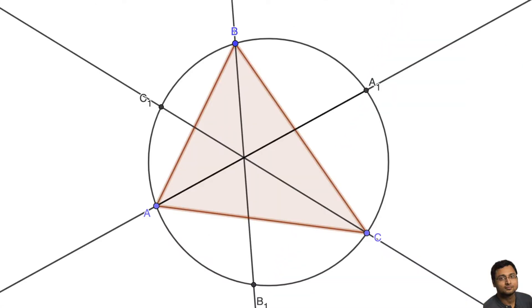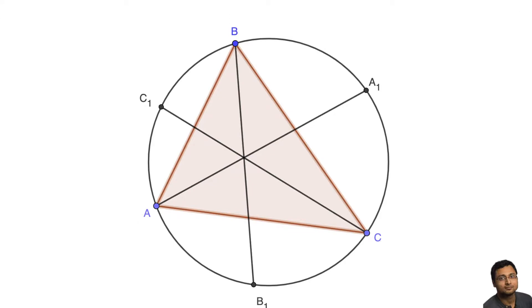So, in this process, we get a new triangle, and that triangle is A1, B1, C1.